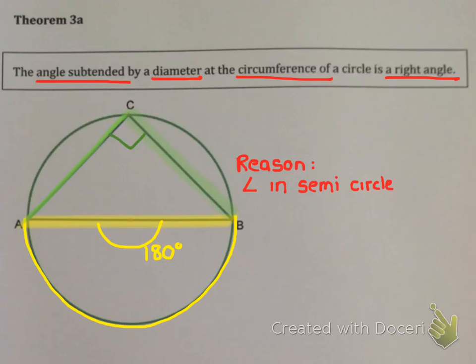You could in fact use angle at center equals twice angle at circumference, but it's so much longer. So in the case of diameter, we like to use the shorter reason, angle in a semicircle.